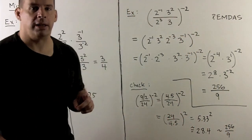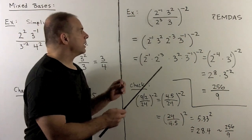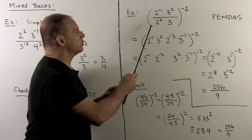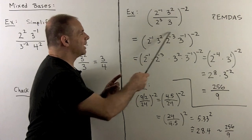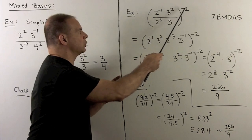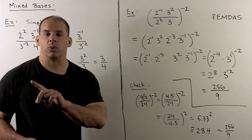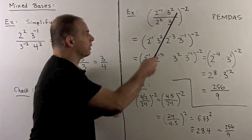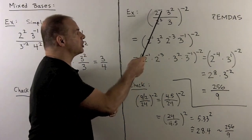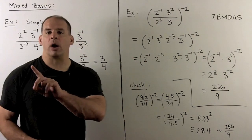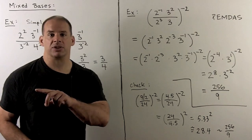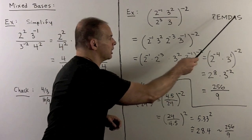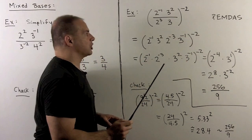Slightly more complicated. We'll take two to the minus one times three squared over two cubed times three, take that quantity, and raise it to the minus two power. We have options in how we proceed. We could flip the fraction to get rid of the minus sign, but we'll just go by order of operations — PEMDAS: parentheses, then exponents, multiplication, division, addition, and then subtraction.